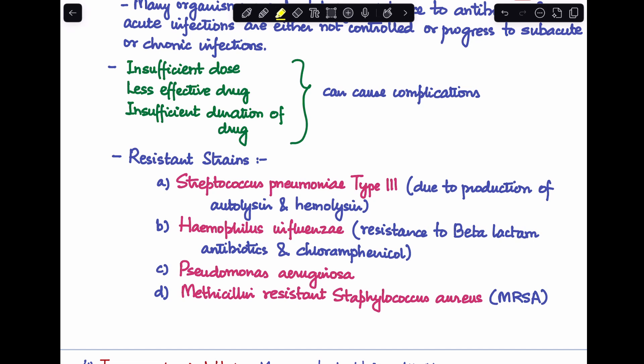Now after this, we need to know what are some resistant strains that we commonly encounter in a case of CSOM. These strains are Streptococcus pneumoniae type 3, and the resistance is due to the production of autolysin and hemolysin. Second resistant strain is Hemophilus influenzae. They have a resistance to beta-lactam antibiotics and chloramphenicol. Third is Pseudomonas aeruginosa, and fourth is methicillin-resistant Staphylococcus aureus, or also known as MRSA.